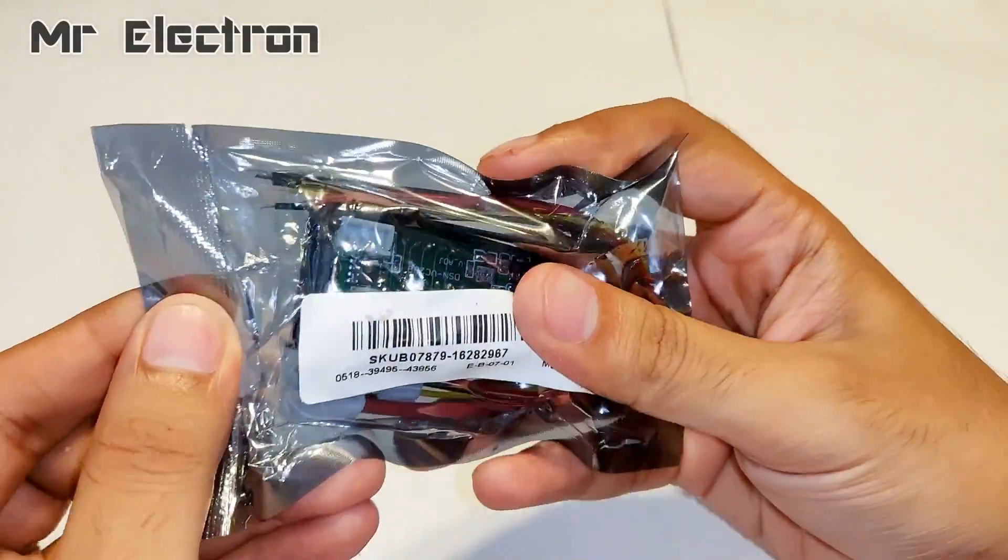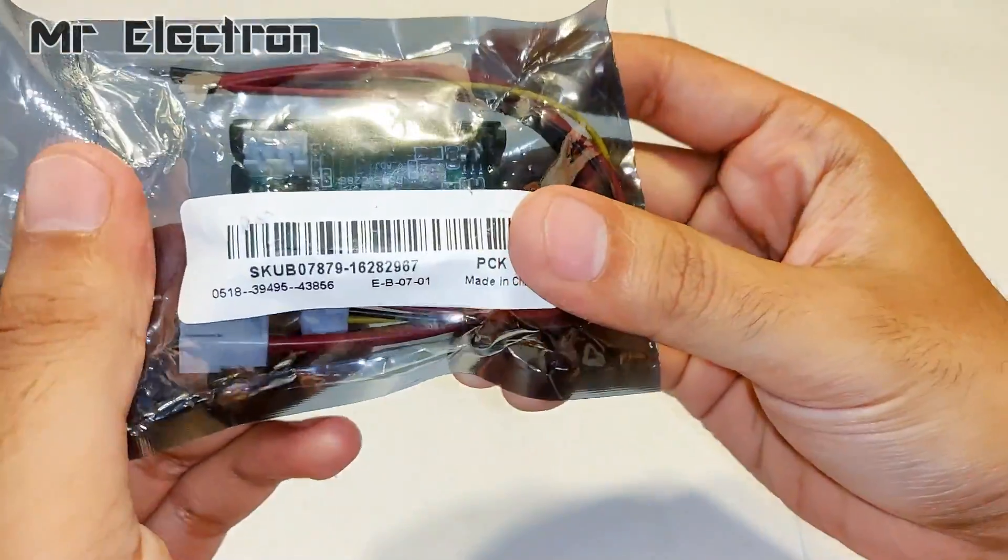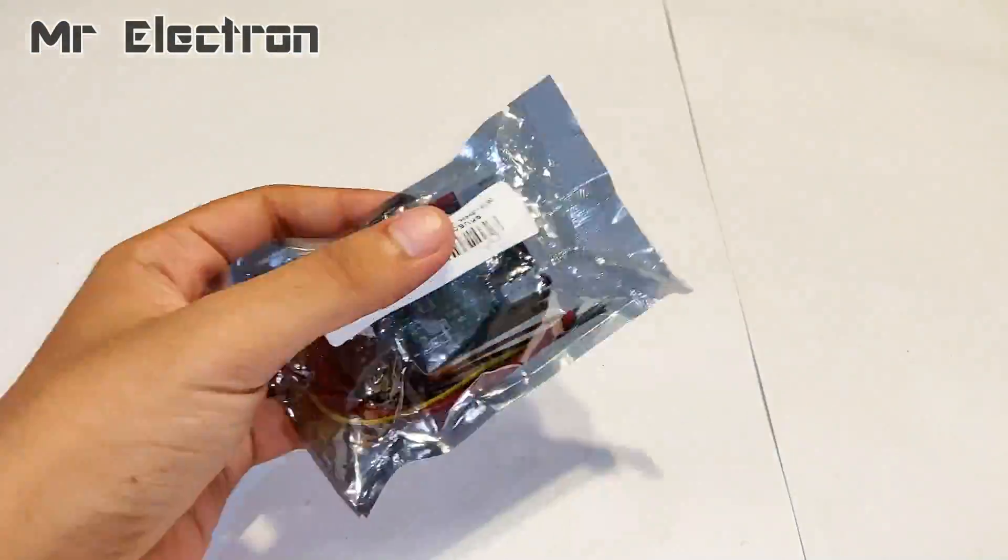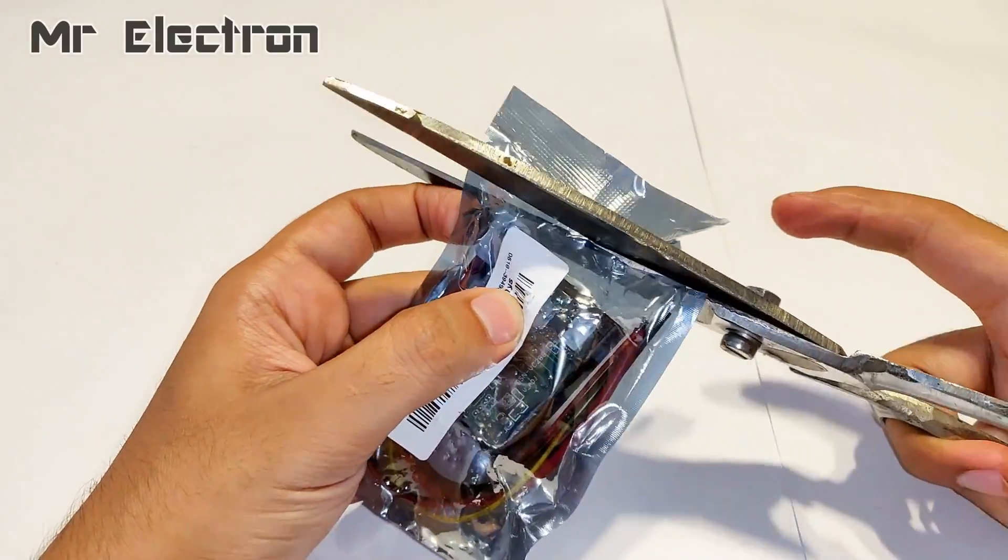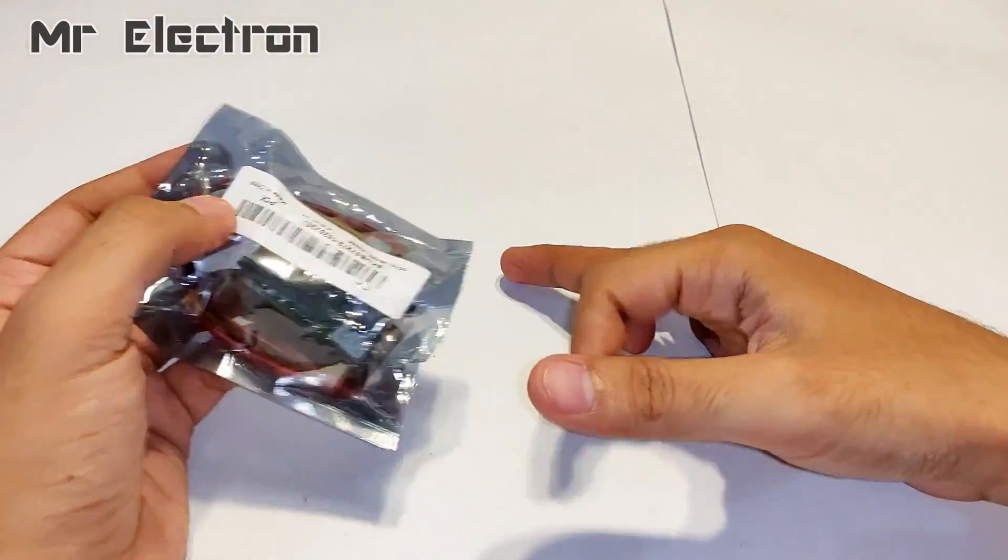Hi guys, welcome back to my channel. In this video I'm going to use a 500F 2.7V supercapacitor to excite the field winding of a car alternator for running it as a DC motor.